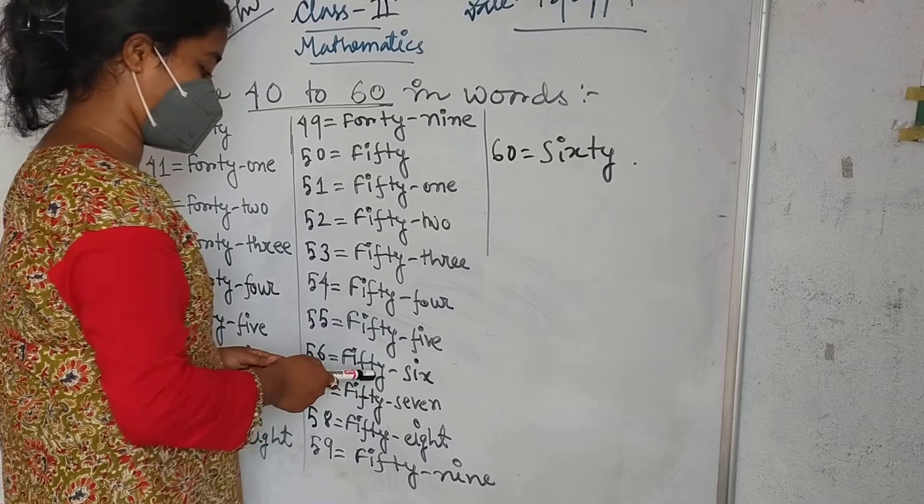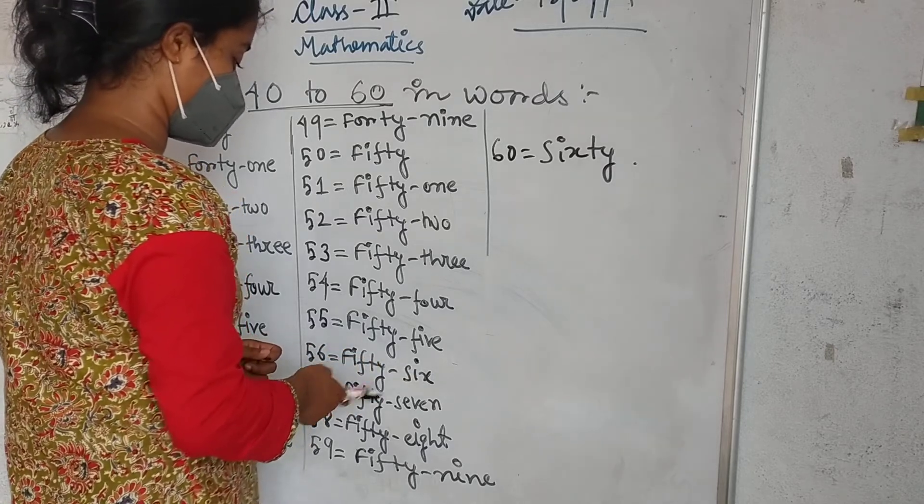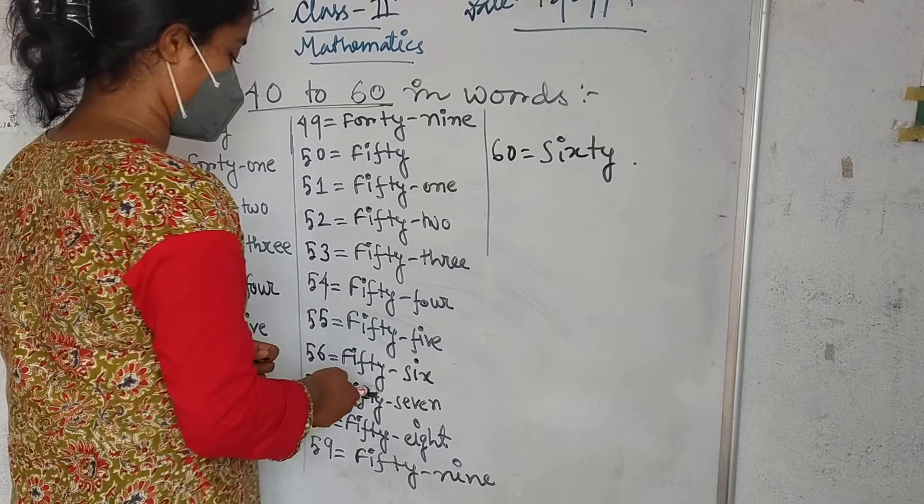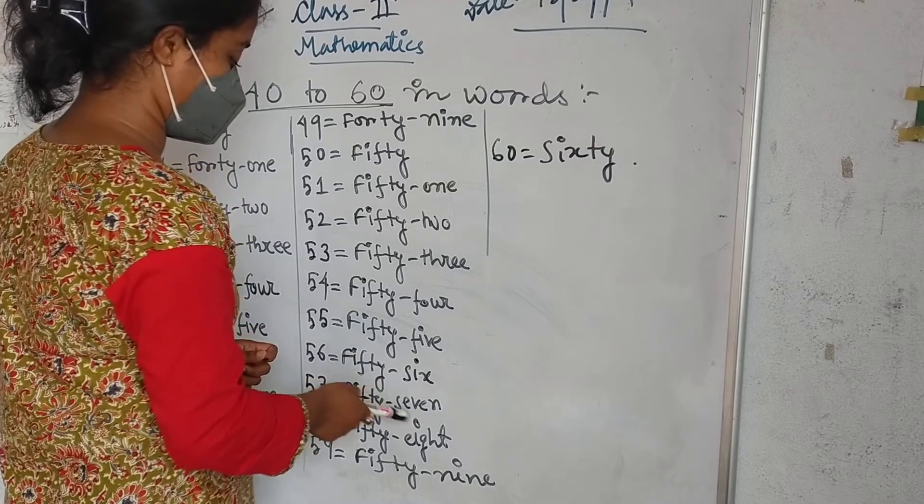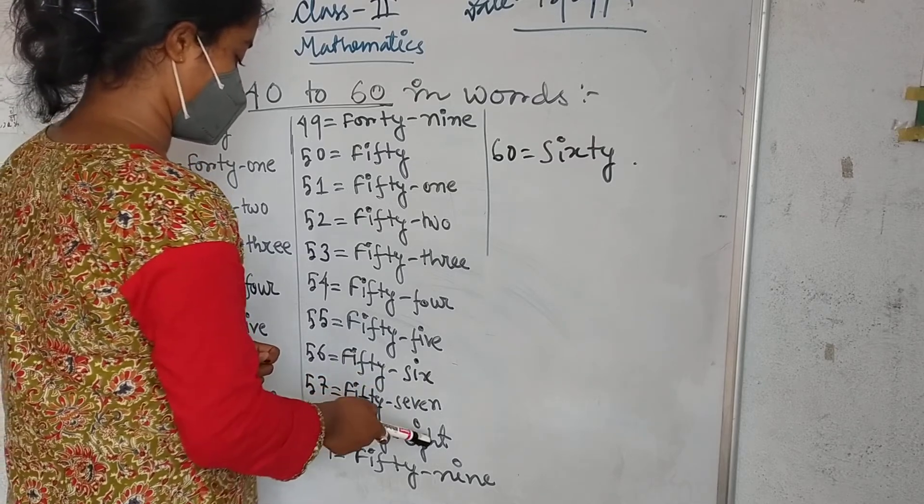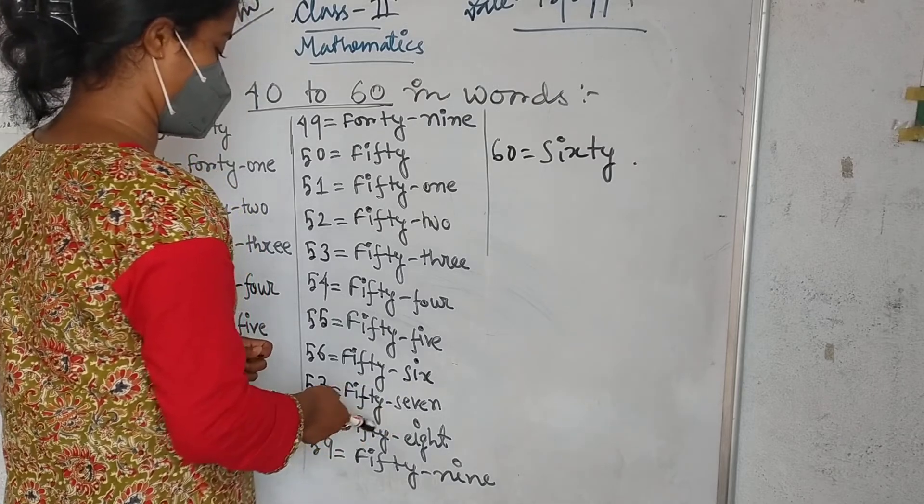Then 56: F-I-F-T-Y, fifty, S-I-X, six, fifty-six. Then 57: F-I-F-T-Y, fifty, S-E-V-E-N, seven, fifty-seven. Then 58: F-I-F-T-Y, fifty, E-I-G-H-T, eight, fifty-eight.